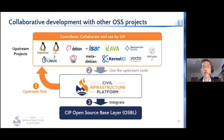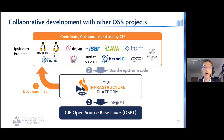The upstream first principle is essential to achieve industrial requirements, especially in terms of long-term maintenance. We collaborate with upstream projects — before using outputs, we upstream what we have and don't keep them locally. By continuously upstreaming and using the results, we are moving toward our goal.